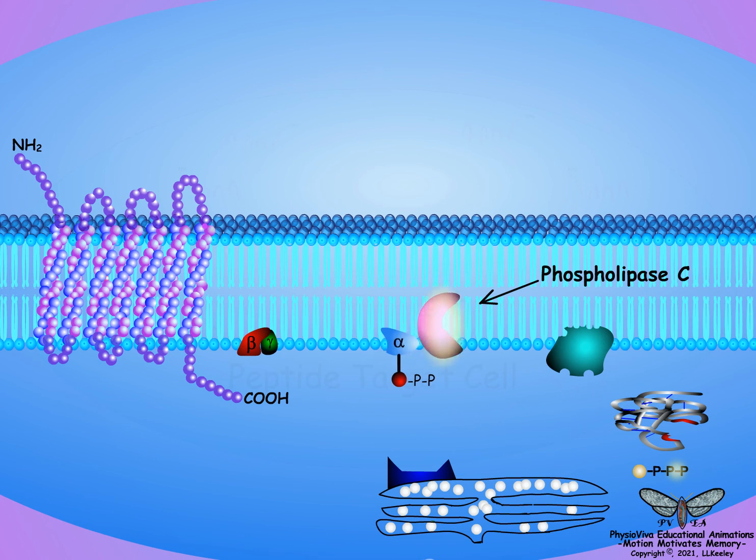Energy captured from the hydrolysis of the terminal phosphate of guanosine triphosphate is transferred through the alpha subunit to activate the phospholipase C. The process of activating the phospholipase C converts the guanosine triphosphate back to guanosine diphosphate, and the alpha subunit rejoins the beta and gamma subunits to reform the inactive G protein.